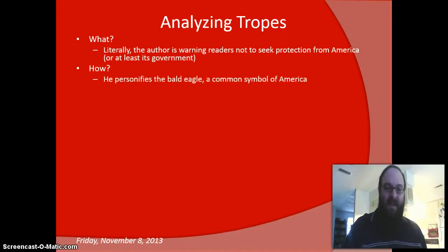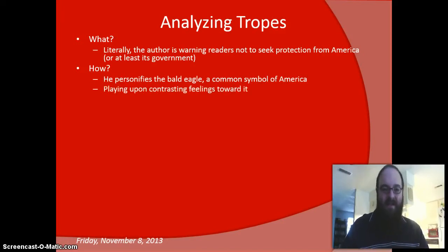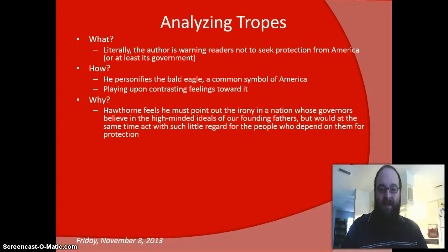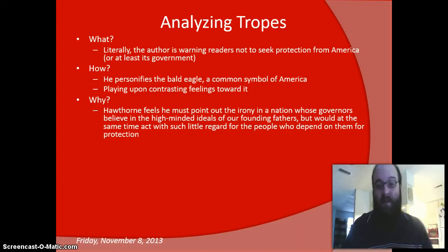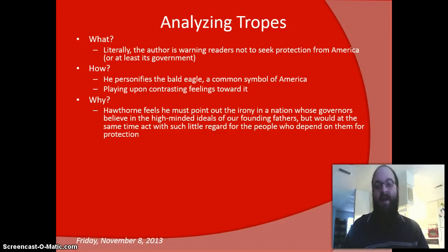How does he go about doing this? He employs personification and symbolism — he personifies the bald eagle, which is a common symbol of America, and through doing so he plays upon our contrasting feelings toward the eagle. Why is he doing this? Hawthorne feels he must point out the irony in a nation whose governors believe in the high-minded ideals of the founding fathers, but would act with such little regard for the people who depend on them. Hawthorne was ousted from office not because he wasn't good at his job, but because he was the wrong political party — purely partisan presidential favoritism.